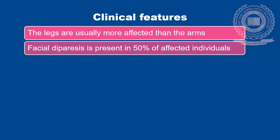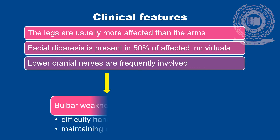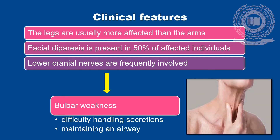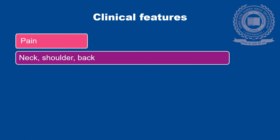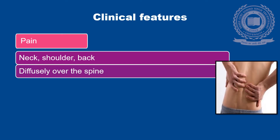Facial diparesis is present in 50% of the affected individuals. Lower cranial nerves are frequently involved, causing bulbar weakness with difficulty handling secretions and maintaining an airway. The diagnosis in these patients may initially be mistaken for brainstem ischemia. Pain in the shoulder, neck, and back, and diffusely over the spine is also common in the early stages of Gulenbady Syndrome, occurring in about 50% of the patients.